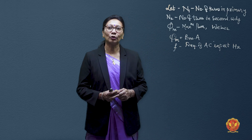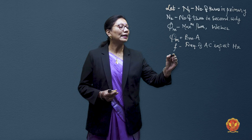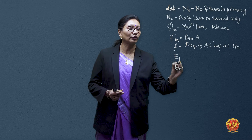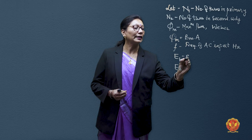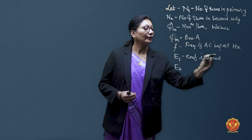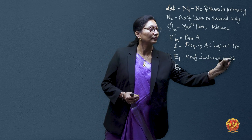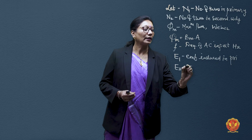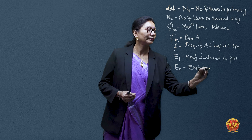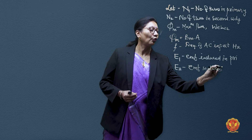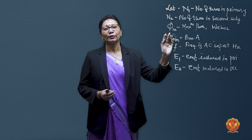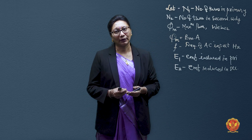Due to this flux set up in the core, EMFs are induced in primary and secondary windings. E1 is the EMF induced in primary winding and E2 is the EMF induced in secondary winding. These are the quantities to be used in the EMF equation.